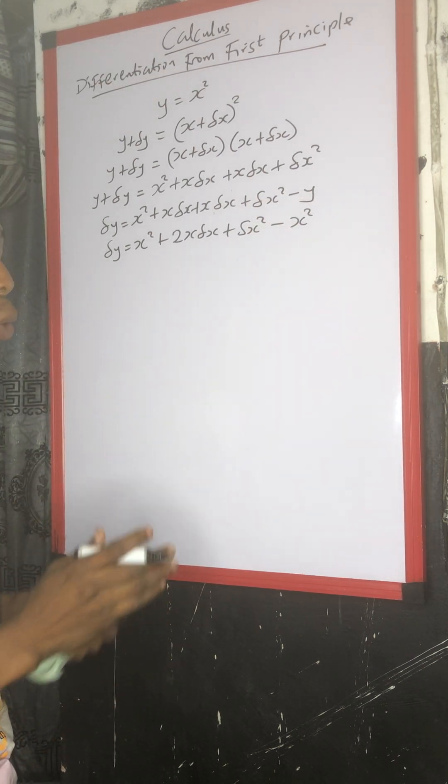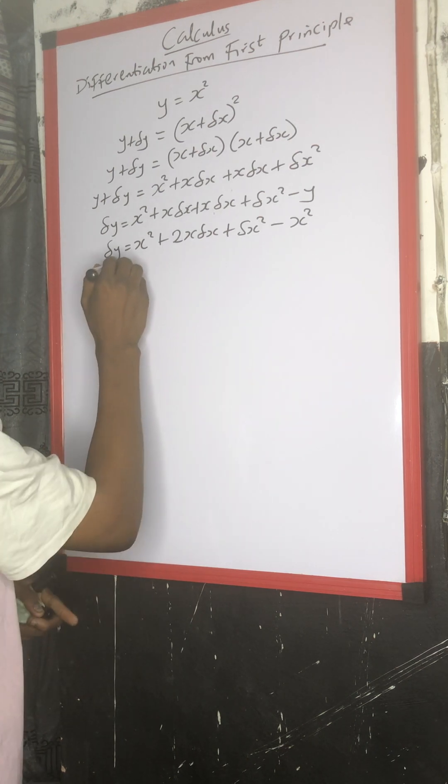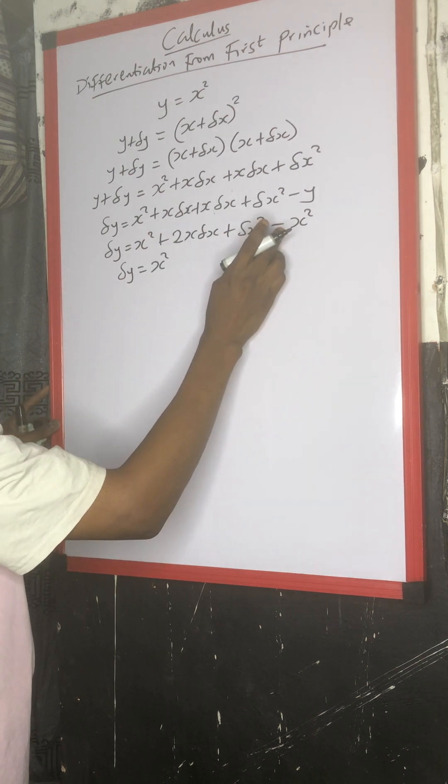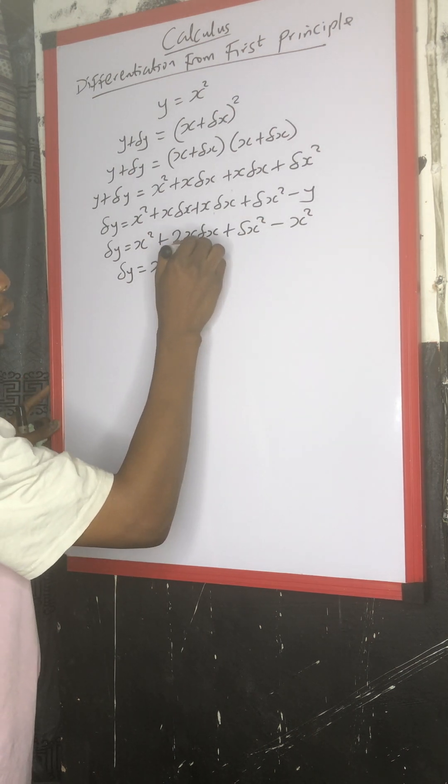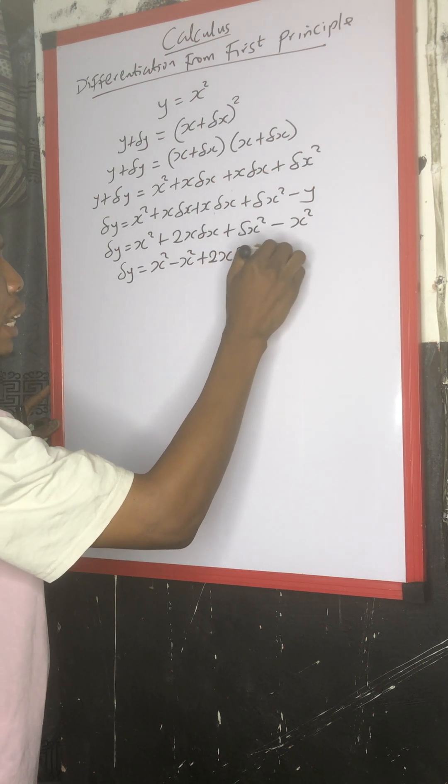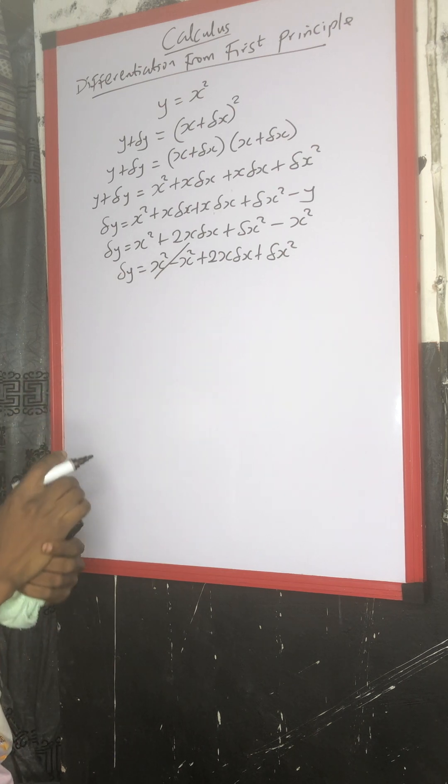Because our y is representing s squared. So this time, what you do is to collect like terms or you eliminate the common terms. So change in y equals to s squared, we have minus s squared, then plus 2s change in x plus change in x squared. After that, this can cancel out this.